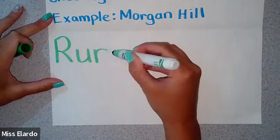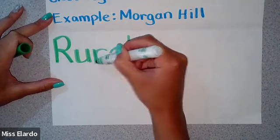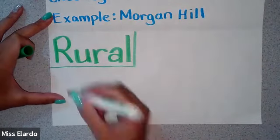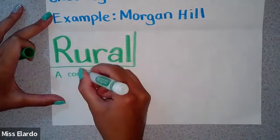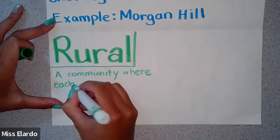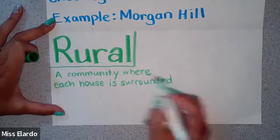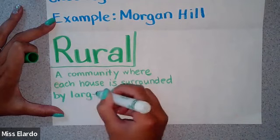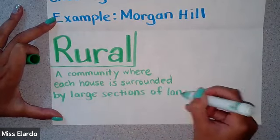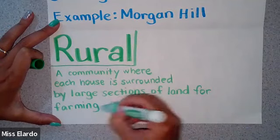R-U-R-A-L. I'm going to make the letters a little thick. Nice — let's box it up. A rural community is a community where each house is surrounded by large sections of land for farming or ranching — where people take care of animals like a herd of animals.